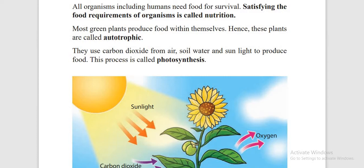Every organism eats, even microorganisms. The most green plants make food themselves. Plants are called autotrophics because they can produce food for themselves. The process of plants producing food is called photosynthesis. In photosynthesis, plants use carbon dioxide from the atmosphere, soil water and sunlight to produce food.